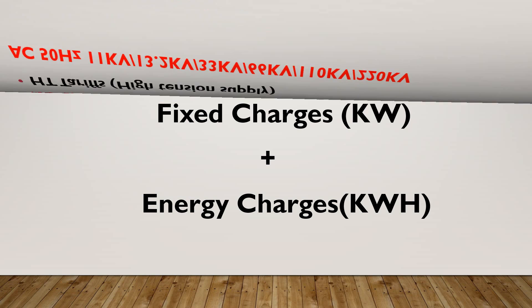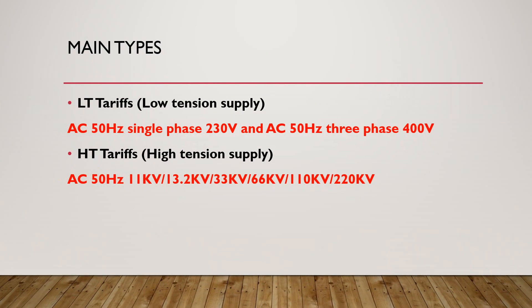There are mainly two basic types of tariff. The first one is LT tariff — low tension tariff — and the other one is HT tariff — high tension tariff. LT tariff is based on voltages from 230 volt single phase to three phase 400 volt. HT tariff is applicable for voltage classes of 11 kV, 13.2 kV, 33 kV, 66 kV, 110 kV, and 220 kV.